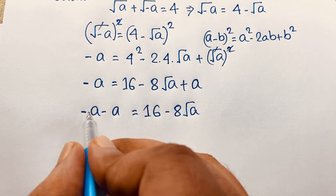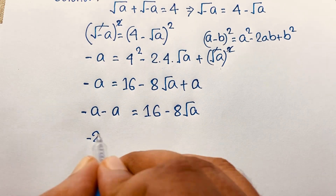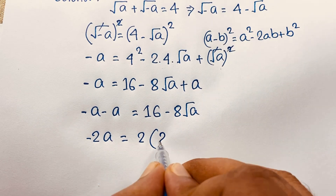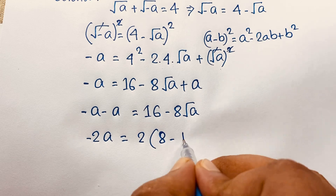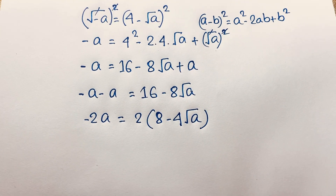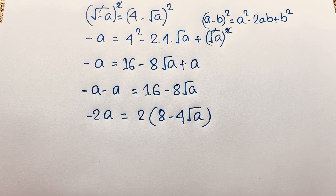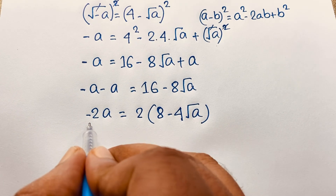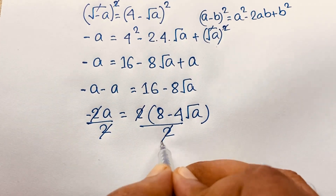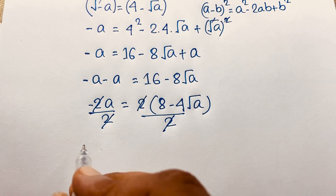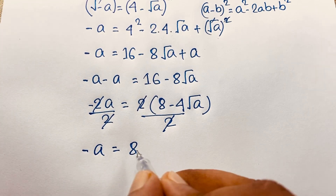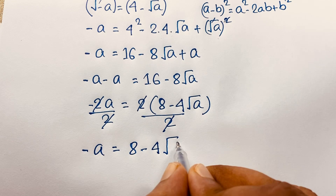Moving on: minus A minus A gives minus 2A. Here 2 is common, so 16 divided by 2 is 8, and 8 divided by 2 is 4. Then here is square root A. If I divide both sides by 2, the 2s cancel out. We find: minus A is equal to 8 minus 4 square root A.